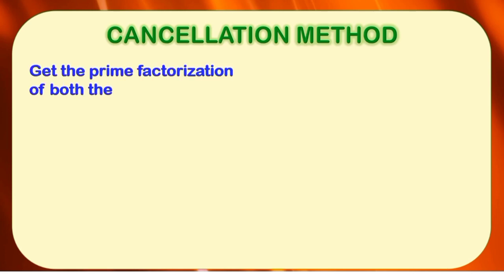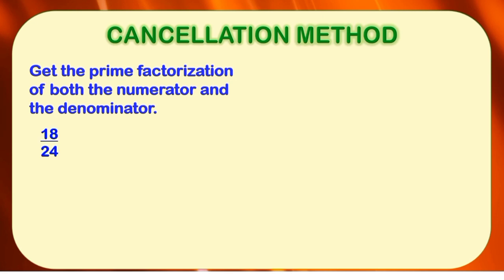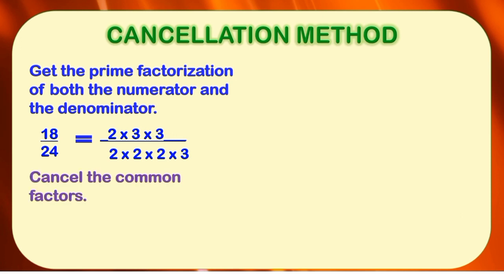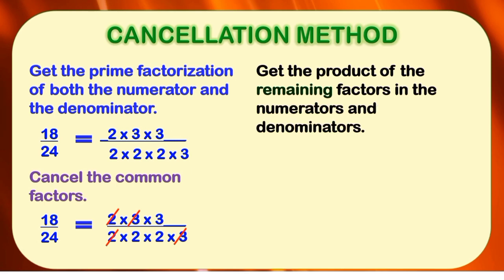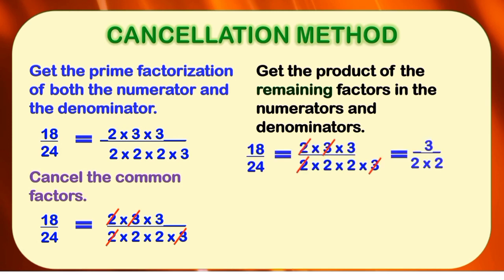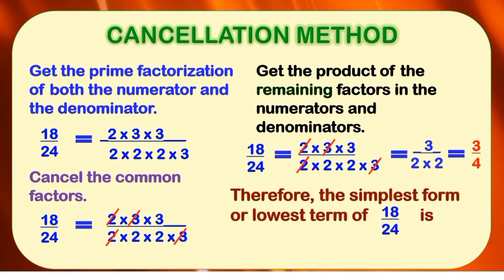For example two, we will still use the cancellation method with the fraction eighteen twenty-fourths. The prime factorization of eighteen is two times three times three, while for twenty-four, that is two times two times two times three. The second step is to cancel the common factors — in eighteen twenty-fourths, there are two pairs of common factors. The third step: the remaining factor in the numerator is three, while in the denominator it is two times two. So we form the fraction three-fourths. Therefore, the simplest form or lowest term of eighteen twenty-fourths is three-fourths.